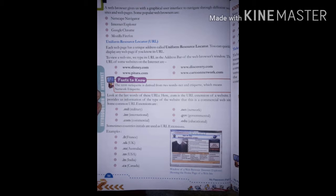Some websites and their URLs on the internet are www.disney.com, www.discovery.com, www.petra.com, www.cartoonnetwork.com. So this is the URL, uniform resource locator, a unique address to check. If we want to open a website, we write the site address here. Look at the last word of these URLs.